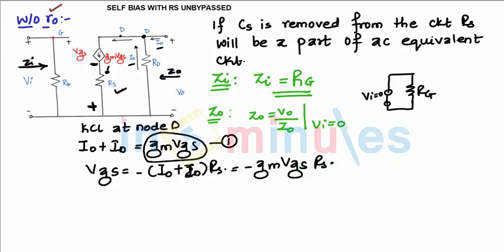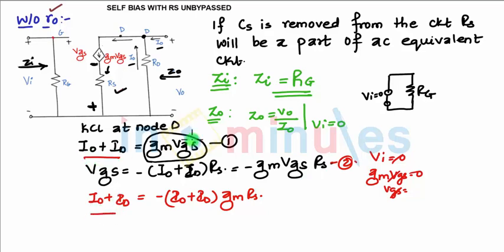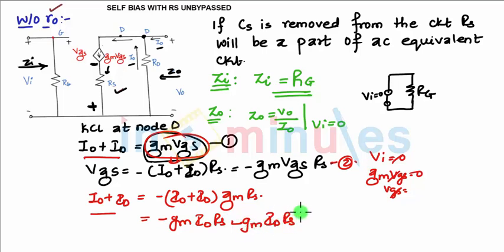If vi is 0, then gm times vgs equals 0. We can write io plus id equals minus of io plus id times gm times Rs — that is, substituting equation 2 into equation 1. On the left-hand side we have io plus id, and instead of gm·vgs we write io plus id times gm times Rs. This expands to minus gm·io·Rs minus gm·id·Rs.